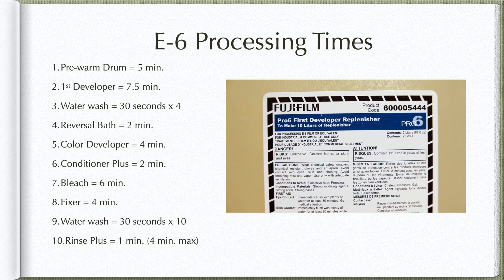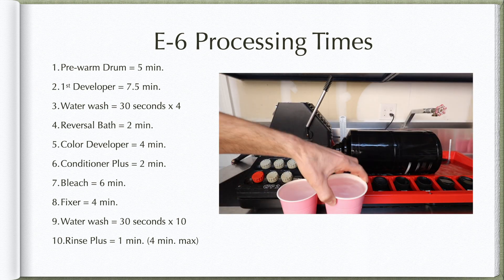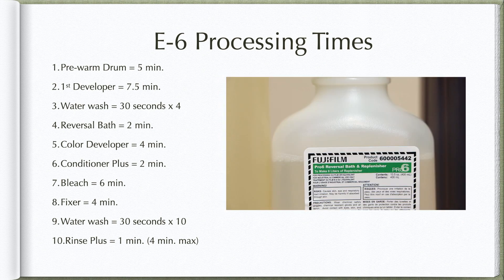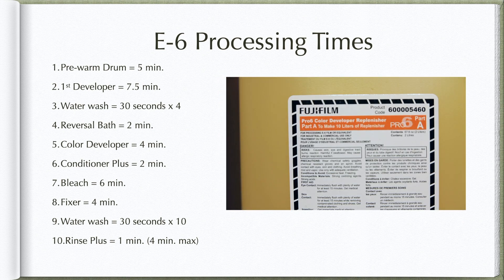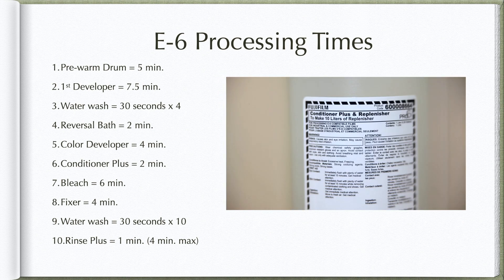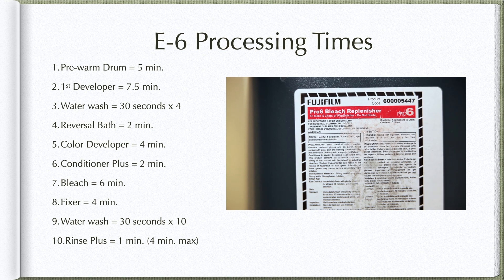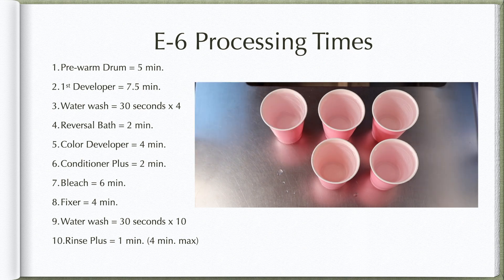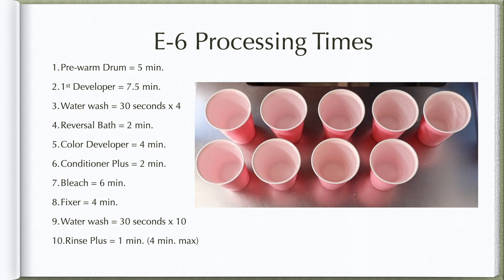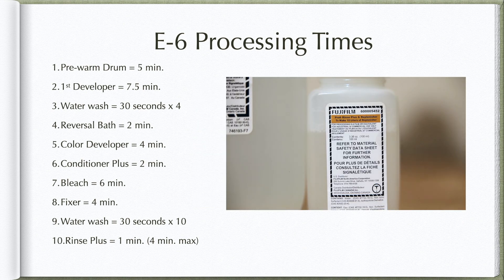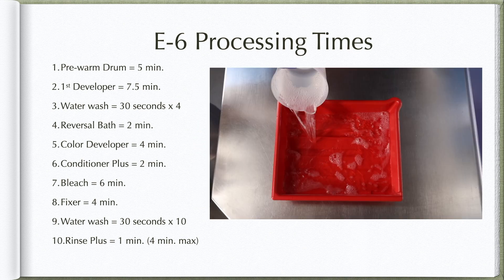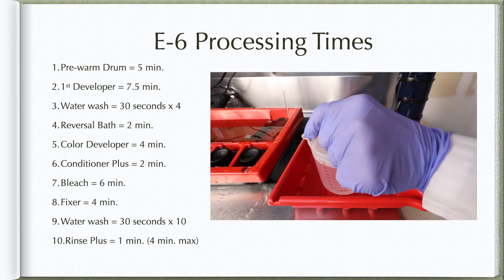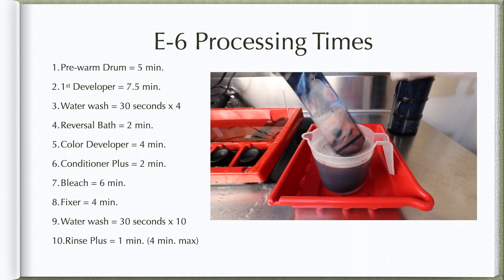These are the processing times I adhere to: first developer, seven and a half minutes; for the water washes, lay out four cups and wash the film for 30 seconds per cup of water; reversal bath, two minutes; color developer, four minutes; conditioner plus, two minutes; bleach, six minutes; fixer, four minutes; for the water washes, lay out ten cups and wash for 30 seconds per cup of water; final rinse, at least one minute but no longer than four minutes. For the final rinse, I complete this either in a tray for sheet film or my measuring cup for roll film for one minute.